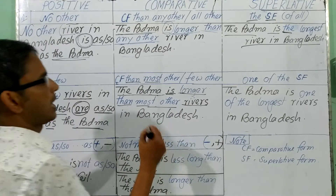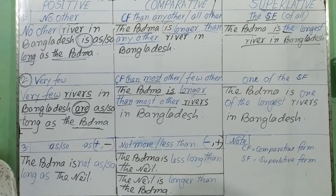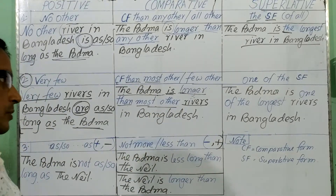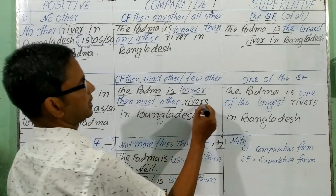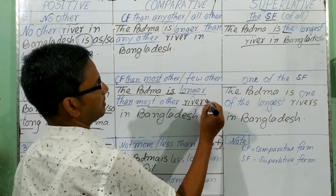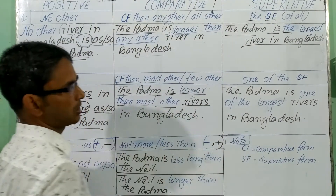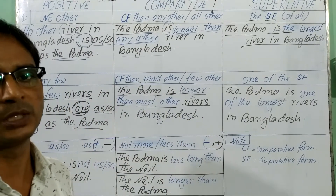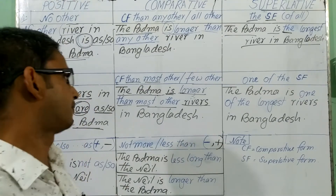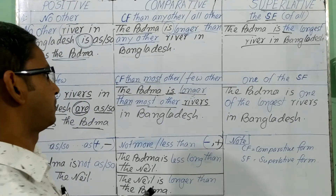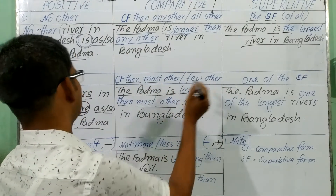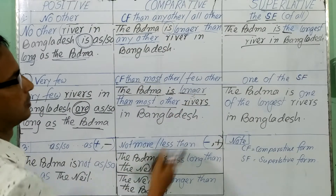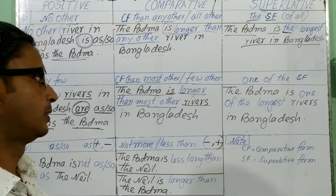After 'most other' you have to use the plural form of noun — 'rivers.' So you have to use 'rivers.' Most of the time students make a mistake here, especially in our country — they sometimes forget to use 's' after 'most other' or 'very few' or 'few others.' After 'most other,' 'very few,' or 'few others,' you will have to use the plural form of noun.